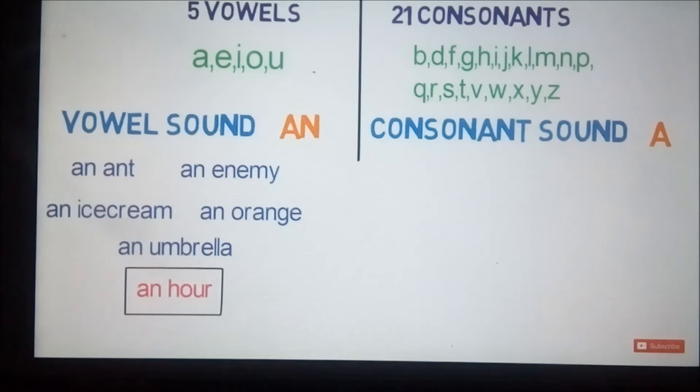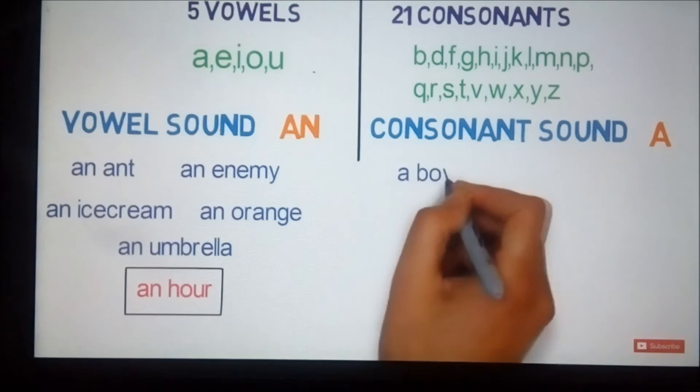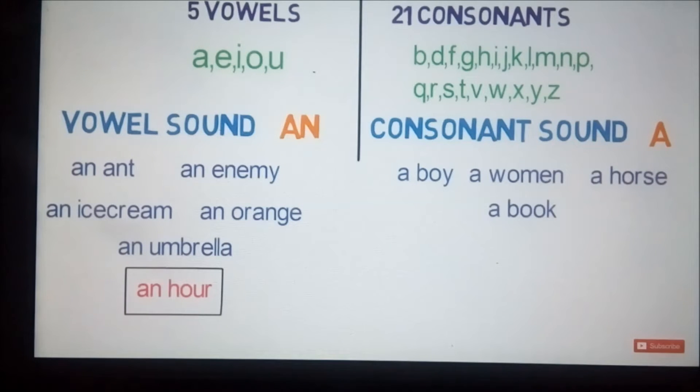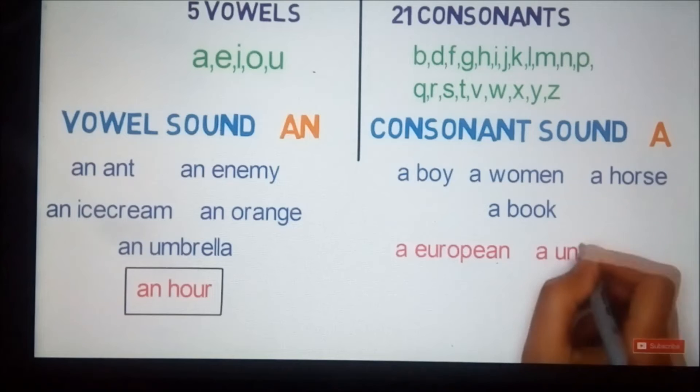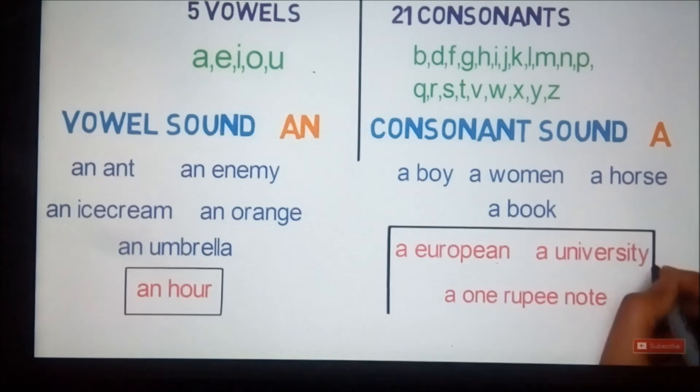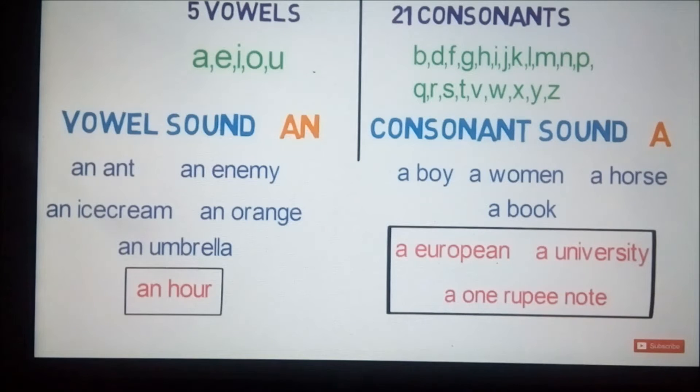Let's look into examples where we use article 'a' before a word: a boy, a woman, a horse, a book. These all start with a consonant sound. Let's look into words which start with a vowel letter but the starting sound is of a consonant: a European, a university, a one rupee note. These all letters start with a consonant sound, so 'a' is used before these words.